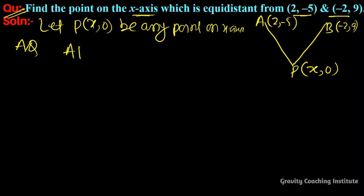Using the distance formula: AP = √[(x-2)² + (0-(-5))²] = √[(x-2)² + (0+5)²]